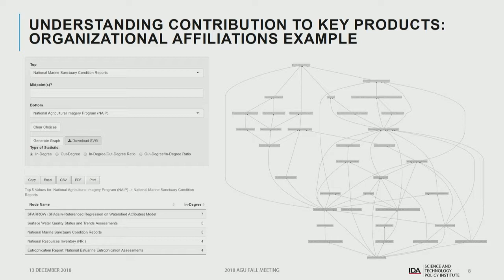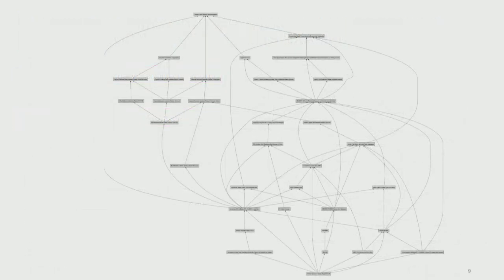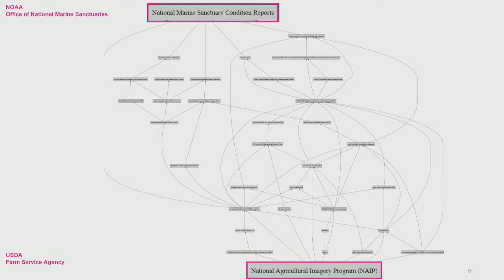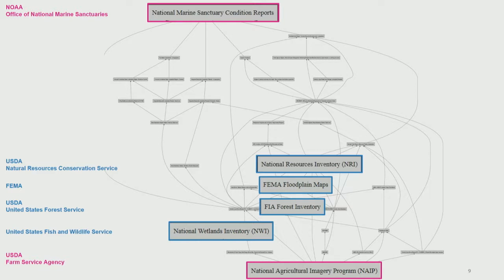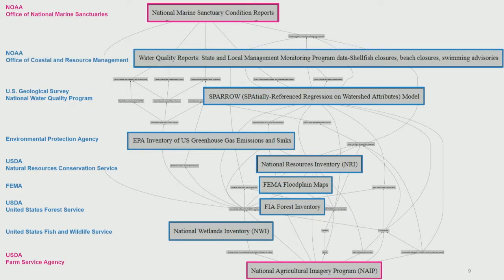One thing we were asked to do was to look at how the National Agricultural Imagery Program — aerial imagery collected by USDA since the 1930s — feeds into other products. We noticed it feeds into the National Marine Sanctuary Condition Reports, a NOAA product. We can trace the pathway through a wetlands inventory, a forest inventory, FEMA floodplain maps, USDA products, EPA products, a USGS water quality program, up to Office of Coastal Resource Management water quality reports — showing how one agency depends highly on another without knowing it.